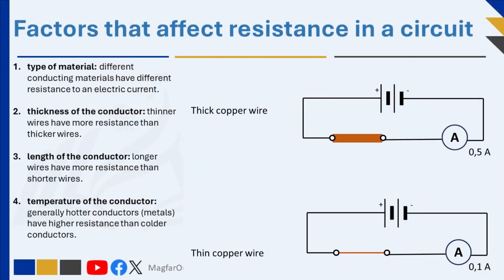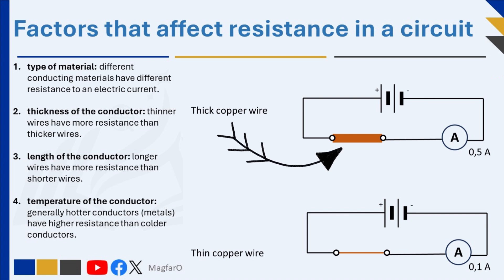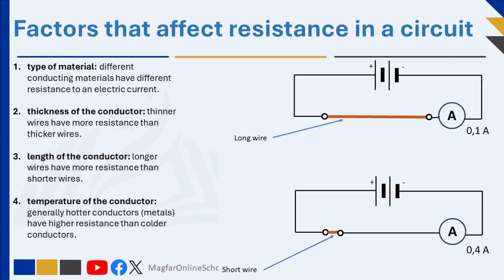The thickness of the conductor also influences resistance. Thinner wires offer more resistance than thicker wires — the thicker the conductor, the less its resistance and the greater the current that will flow through it. Resistance is also affected by the length of the conductor. Longer wires offer more resistance than short wires — the longer the conductor, the higher its resistance and the smaller the current that will flow through it.